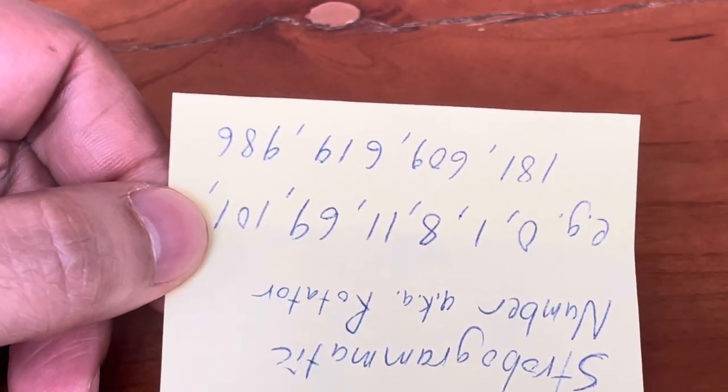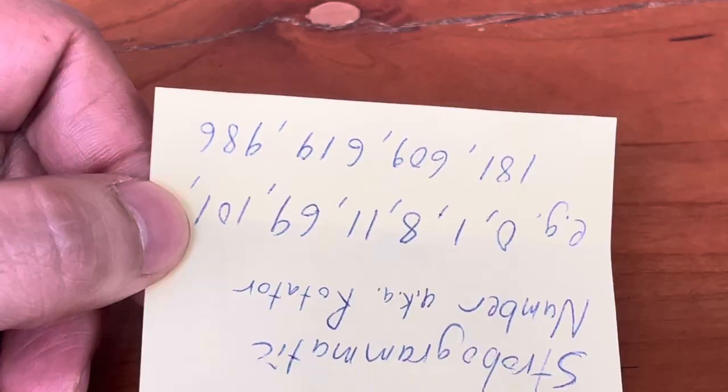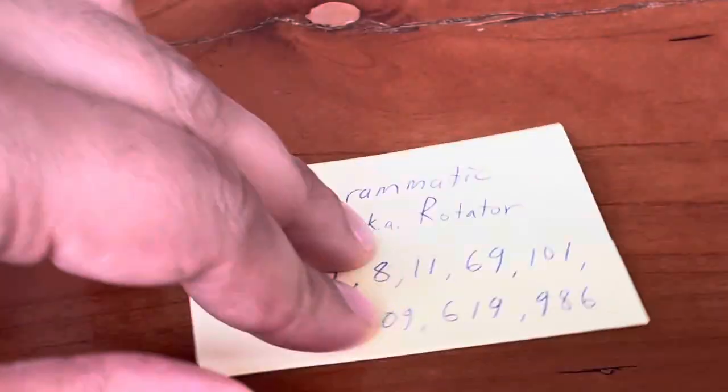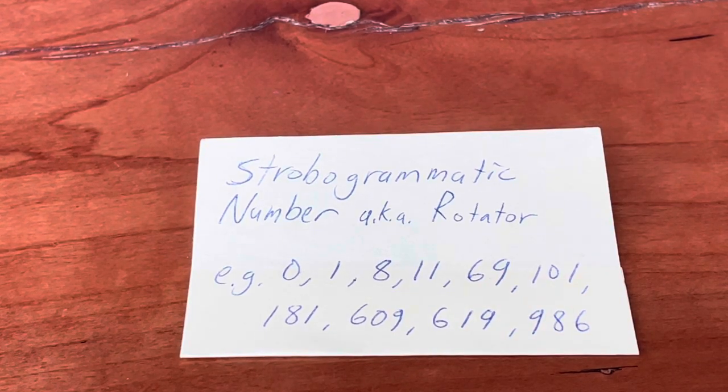So 9, 8, 6, 69, 609, etc. — they read the same front side or rotated 180 degrees.